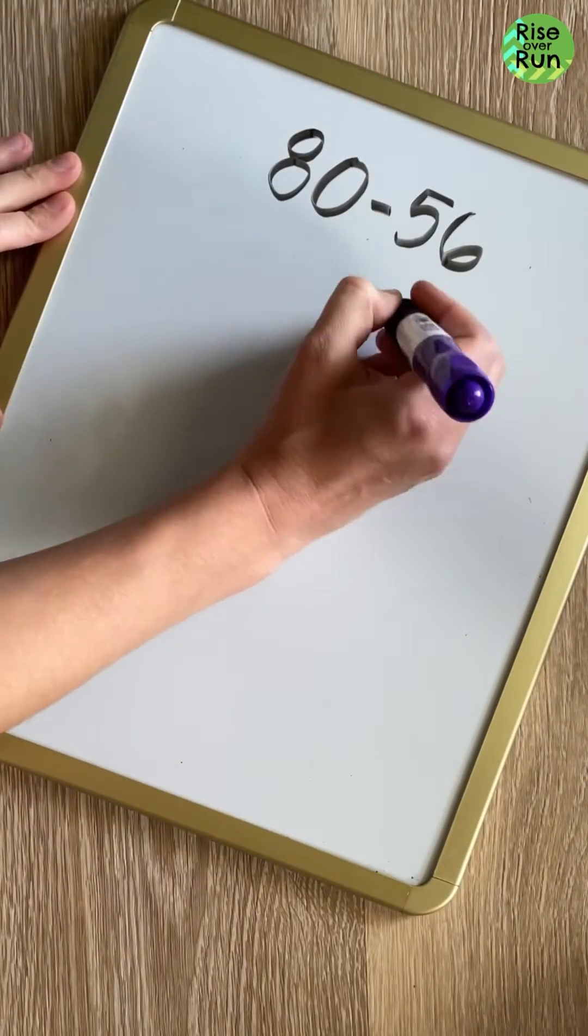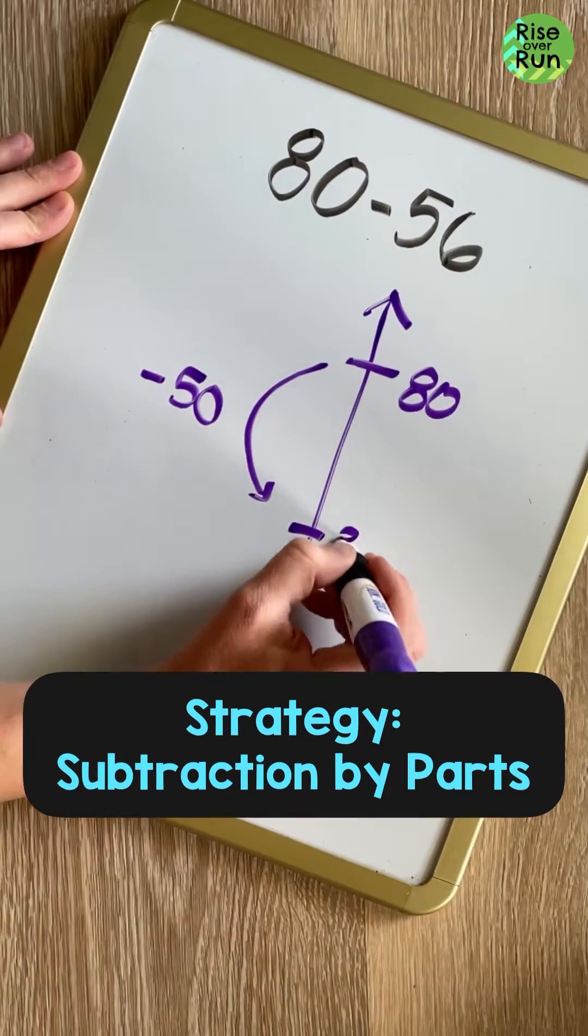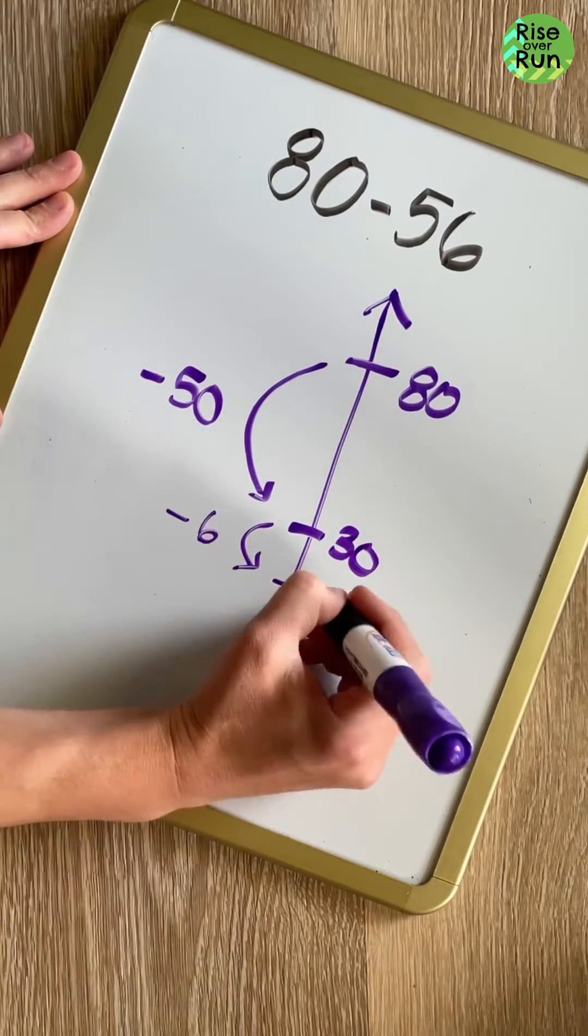Now let's look at a strategy called subtraction by parts. I'm going to first subtract 50 from 80 to get 30, and then I'll subtract the 6 to get 24.